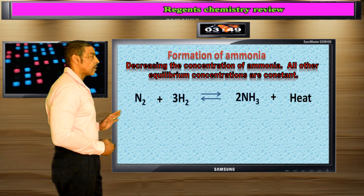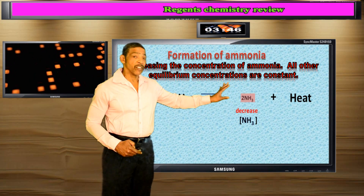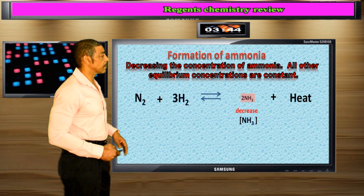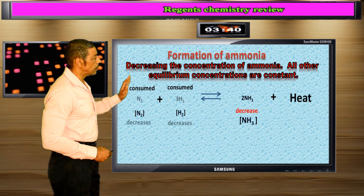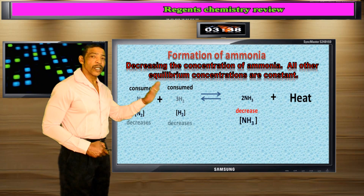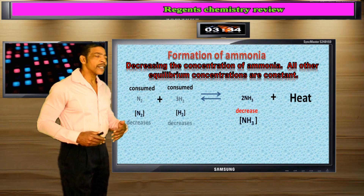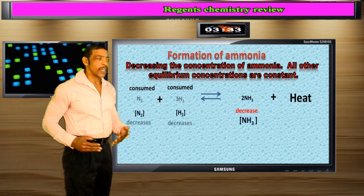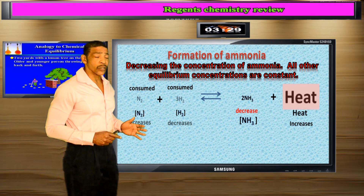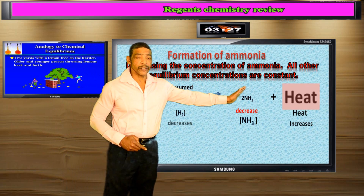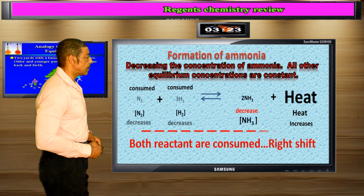Decreasing the amount of ammonia only while holding all other equilibrium concentrations constant. Decreasing NH3 will consume N2 and H2, causing their concentration to decrease as the reaction tries to reestablish equilibrium. But this will cause the amount of heat energy to increase. This is called a right shift.